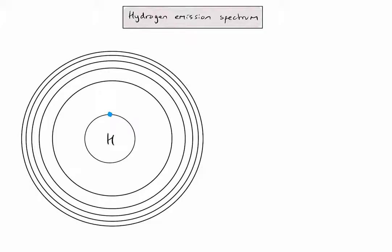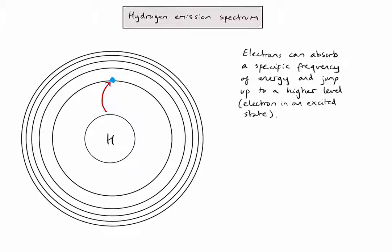As I pass lots of energy through my hydrogen atom, an electron can absorb a very specific frequency of energy and jump up to a higher energy level, where the electron is now in an excited state. For the electron to jump up to that next energy level, it has to absorb exactly the energy difference between the first and second energy levels, which is why only a specific frequency of energy is absorbed.